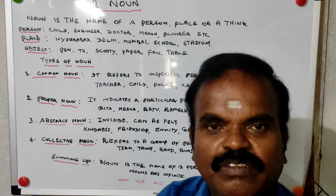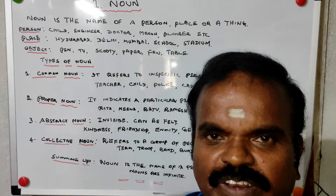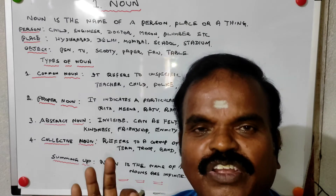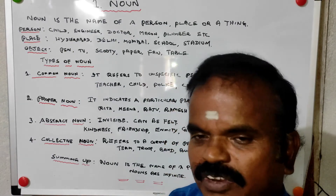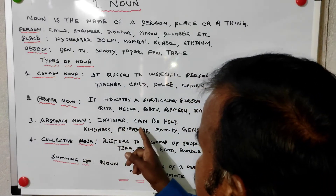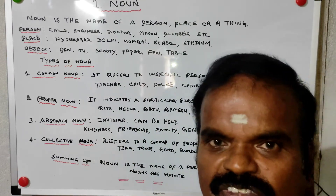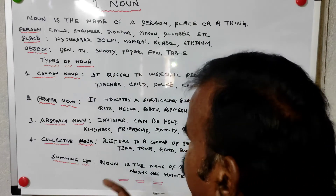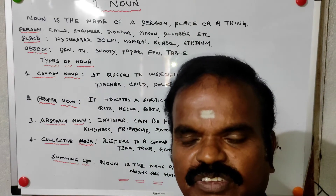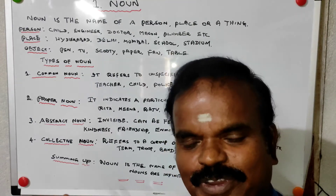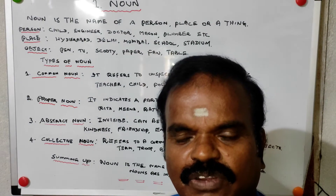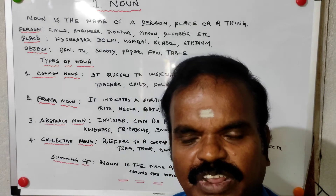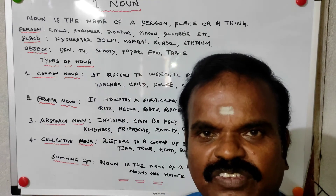Abstract noun — if somebody asks you to show what is sadness, we cannot show it. Examples: kindness, friendship, enmity, generosity. There are endless such items. These are all abstract nouns. Abstract is opposite to concrete — concrete is what we can see, feel, and touch, but abstract can only be felt.